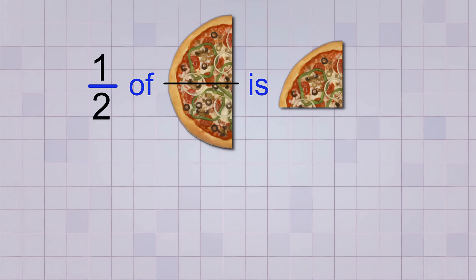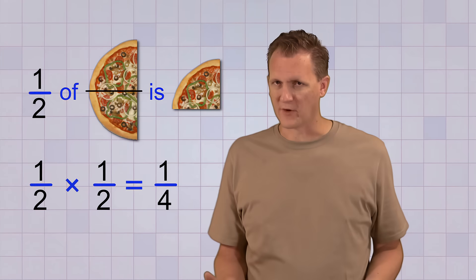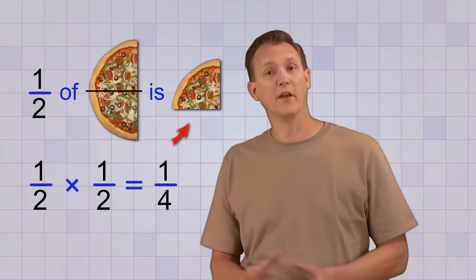And if we do the multiplication, one-half times one-half, you see that we do get one-fourth. So that's why you can think of multiplying fractions as taking part of another part.